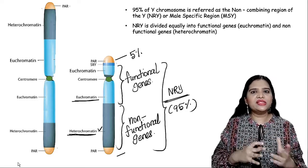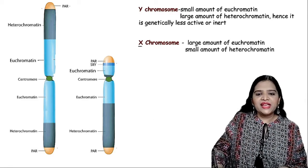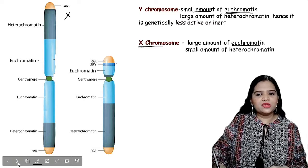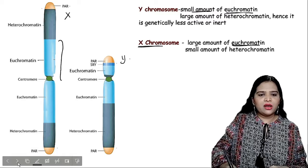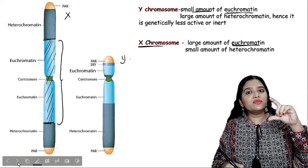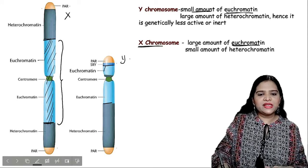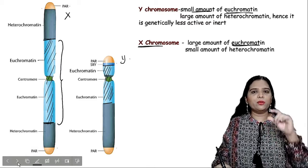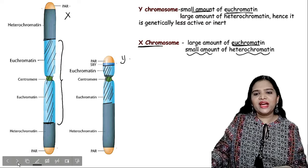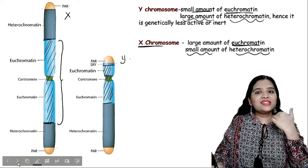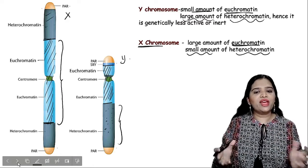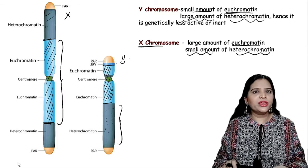Comparing X and Y visually: the X chromosome contains a large euchromatin (functional gene) region shown in light blue, while the Y chromosome's euchromatin region is smaller due to its shorter size. Conversely, the heterochromatin (non-functional) region, shown in gray, is larger in the Y chromosome and smaller in the X chromosome.